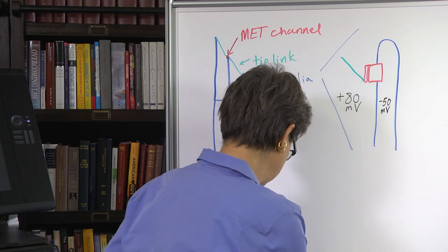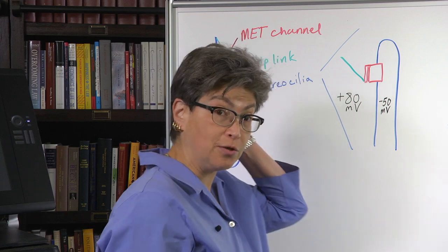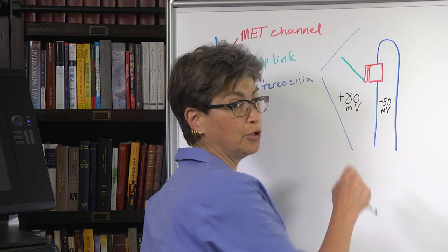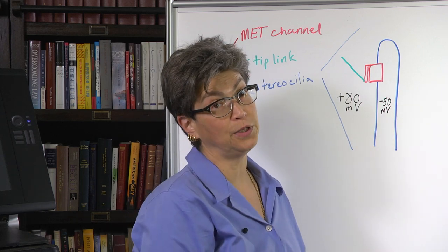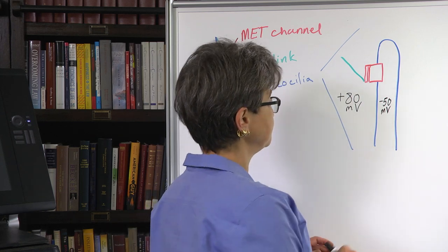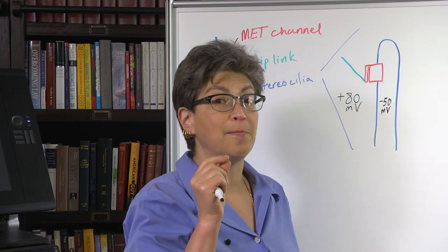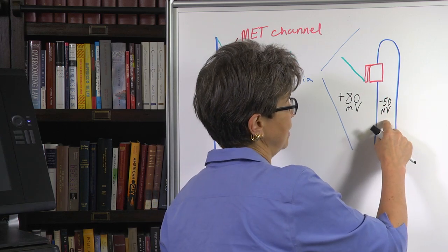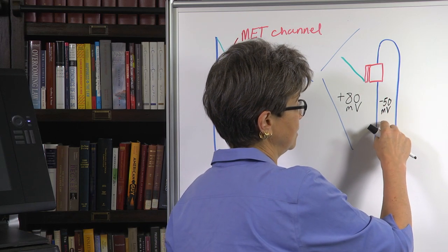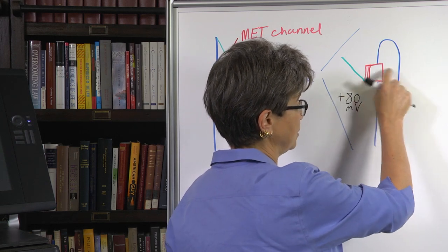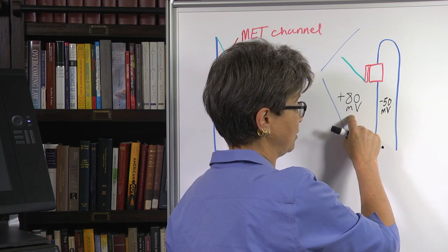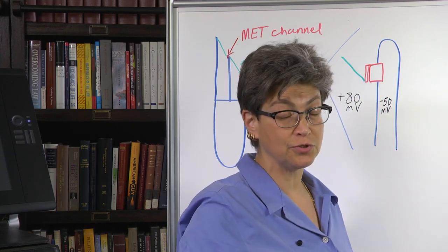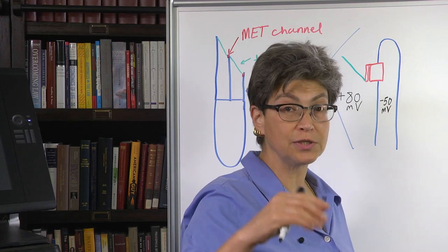Remember furthermore that there's an endocochlear potential of roughly plus 80 millivolts. This is a potential that's made by the battery that is the stria vascularis. So the driving force across this MET channel goes from plus 80 millivolts on the outside in the endolymph side to roughly about minus 50 millivolts or so on the internal side.